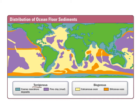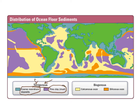The first are what we call terrigenous. 'Genus' means that it was born of or created from, and 'terra' means land. So these are the ones that are made up of rock basically. There are two different kinds based primarily on the texture or size of the grain. We have coarse nearshore deposits like sand and gravel, and further out we have fine clay and mud type sediments. These are terrigenous in nature — they come from ground up minerals and rocks.